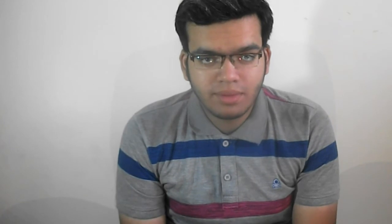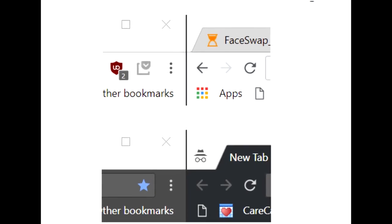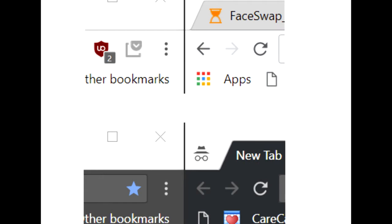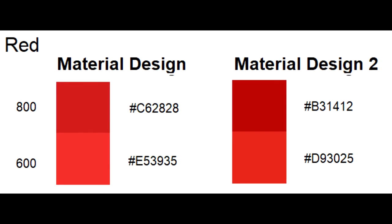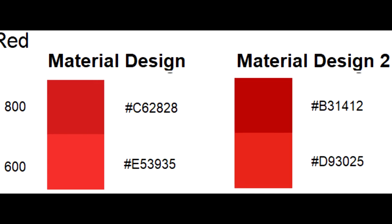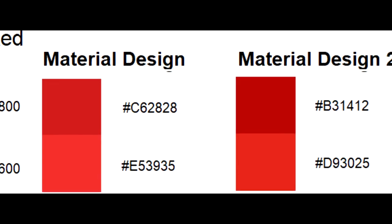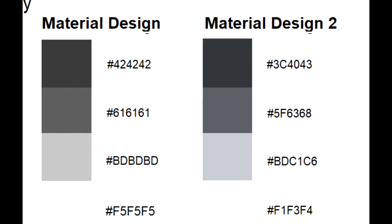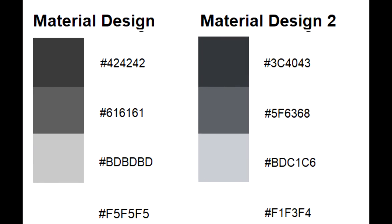Google's Material Design 2 has changed some looks in the Chrome tabs. You can see some tweaks in the tab width, but no changes in the new tabs button. Similarly, Google has also changed two colors — gray and red — where red has become darker and gray has become more bluish. You can see it on your screen.